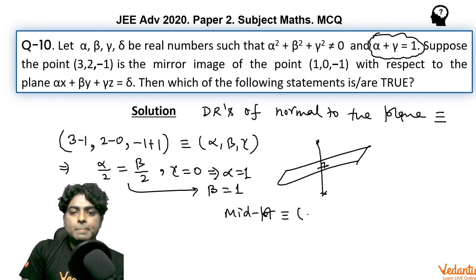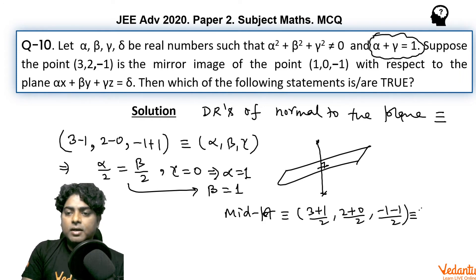What is the midpoint? Obviously (3+1)/2, (2+0)/2, (-1-1)/2. So the midpoint of the line joining the given two points is (2, 1, -1). This point must lie in the plane.